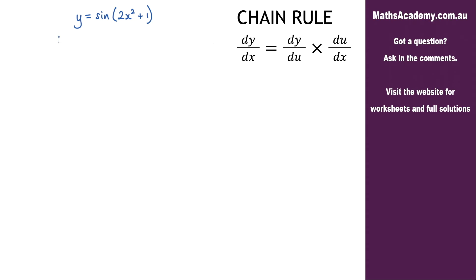The first step is to make the substitution. Let u equal 2x squared plus one.